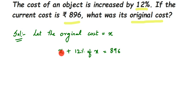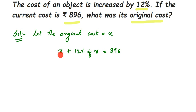The object price was originally x, but they have increased the price by 12 percent — 12 percent of the original cost. So the original price plus the increased price together equals 896, which is the current cost. We have to find x. So the equation is: x plus 12 percent of x equals 896, which means x plus (12/100) × x = 896.